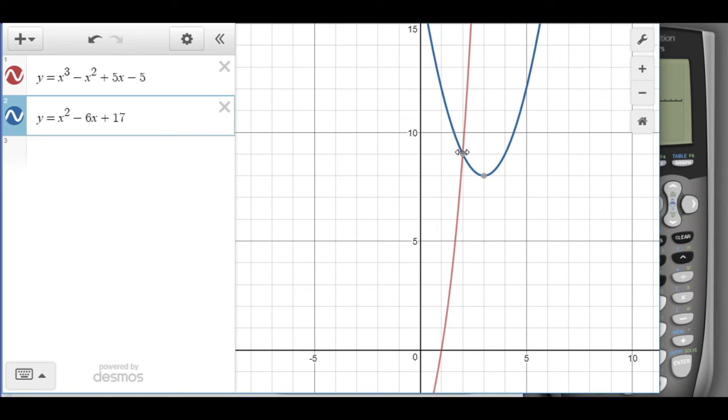If I click on it and hover, I can see that the intersection point is 2, 9, which agrees with what our graphing calculator said. We still have that x equals 2. So whether you use the graphing calculator or Desmos, you have two tools to help you find your answer.